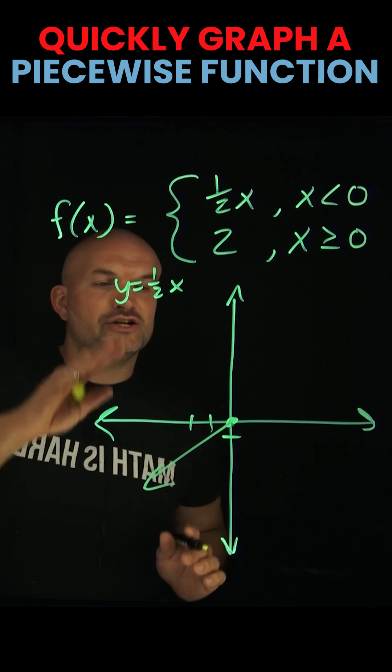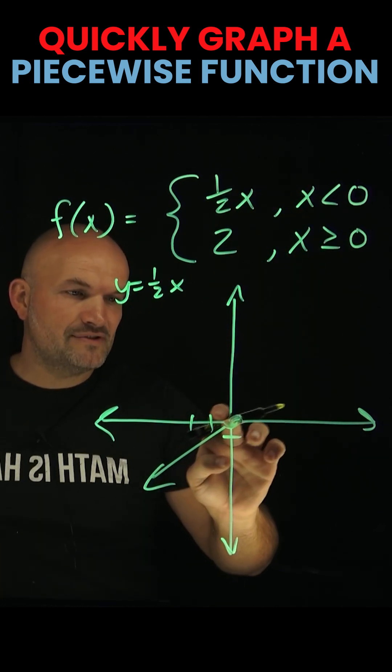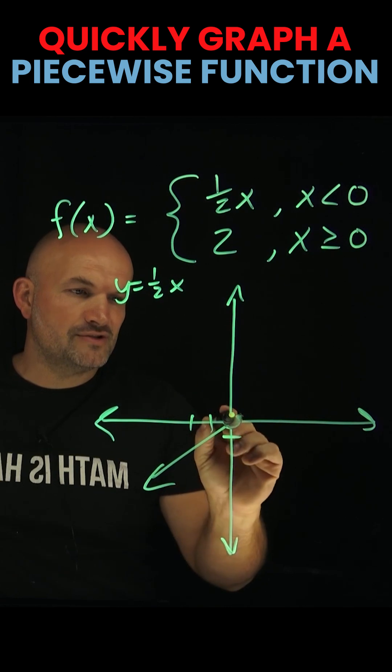Now, the other thing we need to make sure is to understand this is x less than zero. So therefore, instead of using a solid point, I'm actually going to use an open circle.